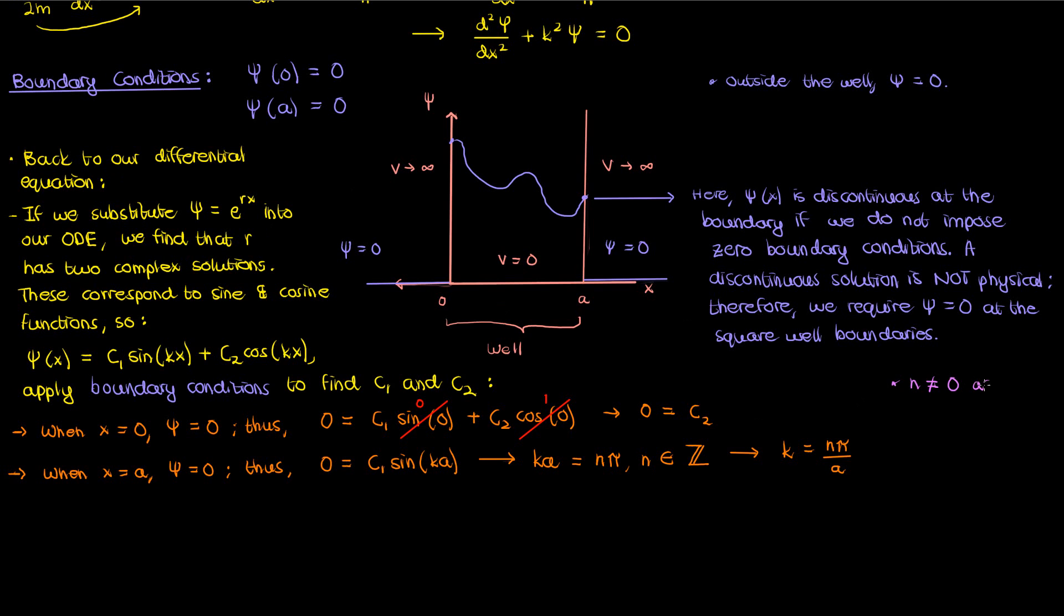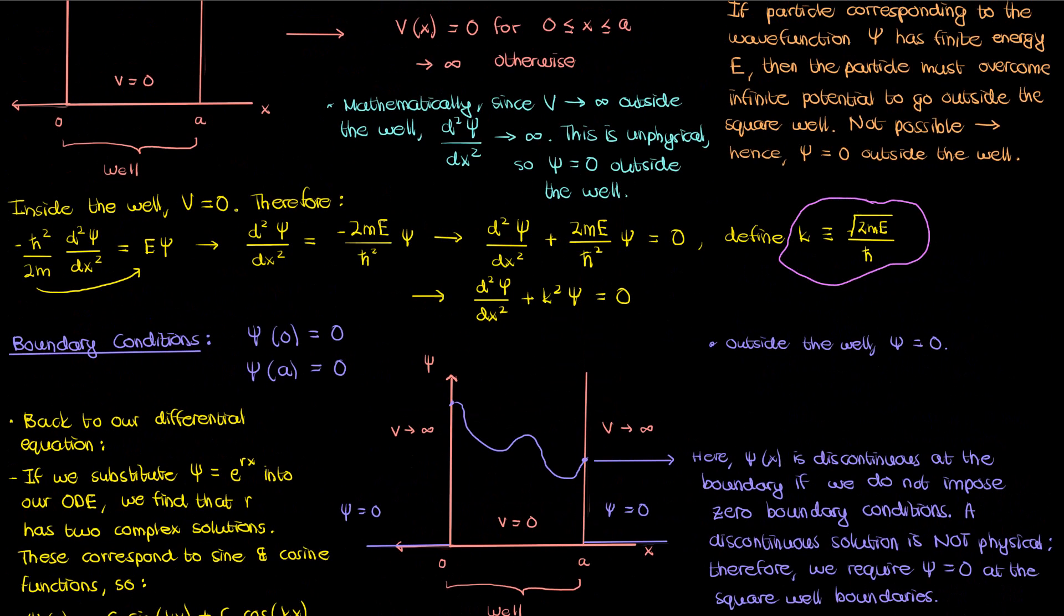Now n can't just be any integer. If it were 0 then that means k would be 0 which would give me a trivial solution for small psi which again I don't want. If it were negative I could use the fact that we can pull out any negatives from the sine function and turn the argument of sine to a positive and kind of absorb that negative into the constant c1 that comes out front. Because of this redundancy and the fact that n can't be 0, what we'll do is restrict n to the positive integers because again negative values of n are essentially redundant.